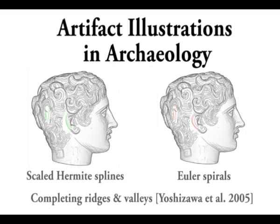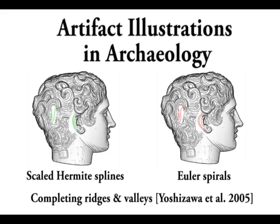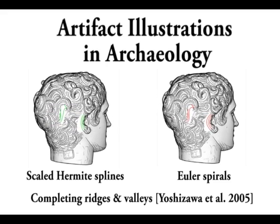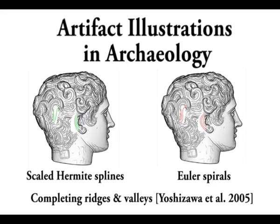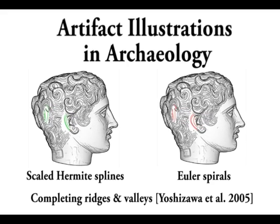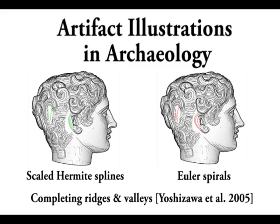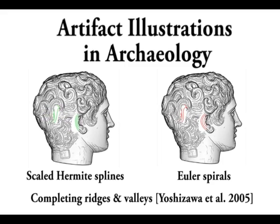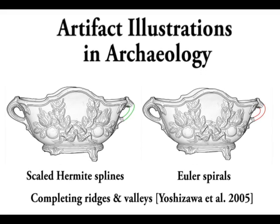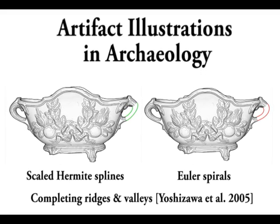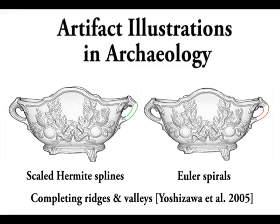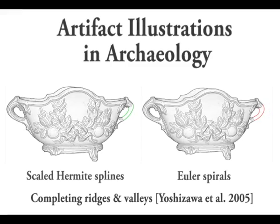Here is a comparison of 3D Euler spirals to automatically scaled Hermit splines, both used to complete a broken head. Note how our curves in red manage to capture the shape of the ear and the S-shaped curl, while the automatically scaled Hermit splines fail to do so. This is another comparison — this time a broken flower pot is completed. Note how our curves in red manage to complete the shape in a manner very similar to the original.